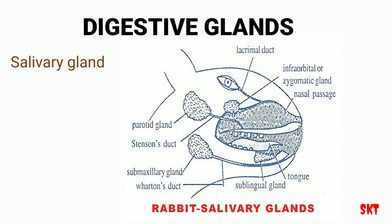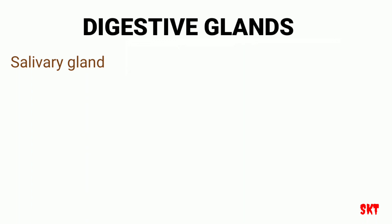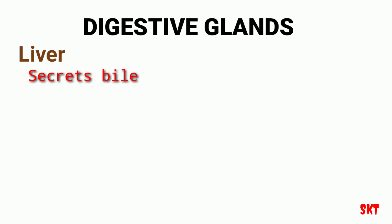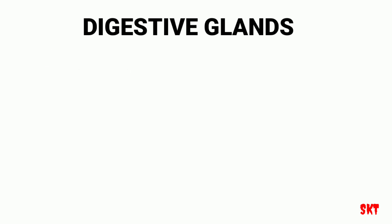The next gland is the liver. It is the largest gland in the body and is dark red and spongy. It secretes bile, which is stored by the gallbladder and helps in the digestion of food.